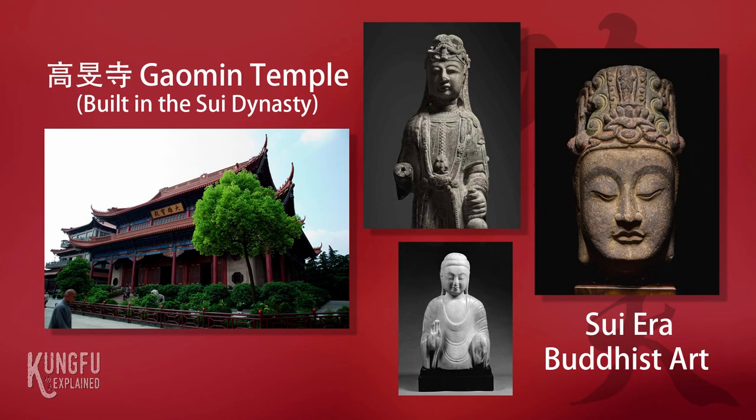Emperor Wen had converted to Buddhism and he saw this as a way to unify his subjects, presenting himself as a Chakravarti ruler — an ideal universal ruler who defends the Buddhist faith. He utilized the shared Buddhist faith between the people in the north and the south as a means to further unify his empire. Emperor Wen's government funded the construction of many Buddhist monasteries as well as the translation of sutras into the Chinese language. By the end of the Sui Dynasty, there were approximately 4,000 Buddhist monasteries and temples with a population of almost 240,000 monks and nuns. At the beginning of the Sui Dynasty, the Shaolin Temple reclaimed its original name once again and was positively affected by Emperor Wen's actions.